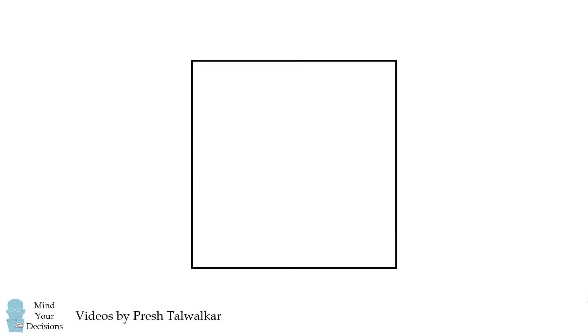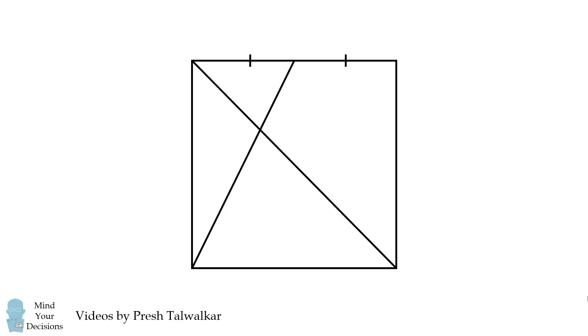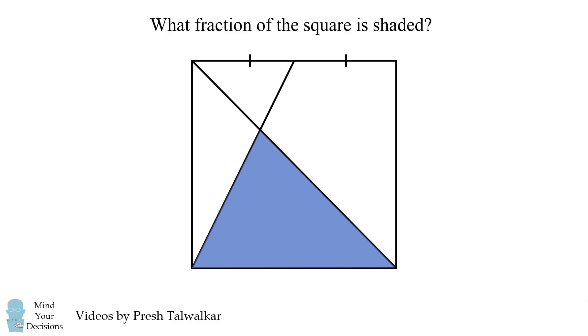So what is this problem? Start out with a square. From the bottom corner of the square, draw a line to the opposite midpoint. Then connect the other two corners of the square. Consider the triangle formed between these two lines and the square side.